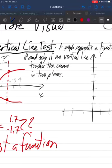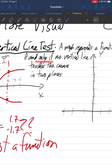So that construction if and only if shows up a lot in mathematics. That's saying if it's a function, then no vertical line touches the curve in two places. And if no vertical line touches the curve in two places, it's a function. They're the same thing.